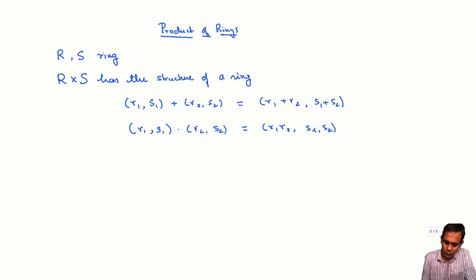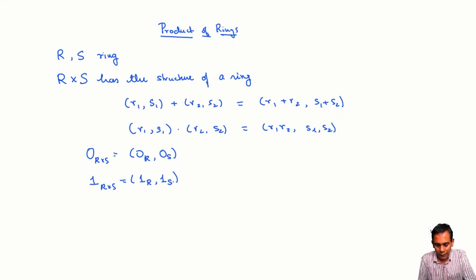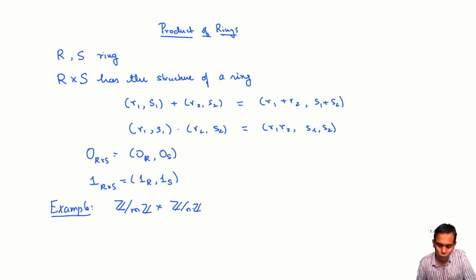Just to make some things clear, let me give a few examples. R×S has a zero element: the zero element of R×S is just (0_R, 0_S). The unit of R×S is (1_R, 1_S). As a simple example, we've already seen that if we have two integers M and N, then Z/MZ × Z/NZ is a group, but it is also a ring under component-wise addition and multiplication.